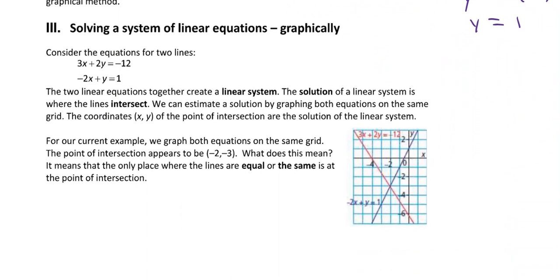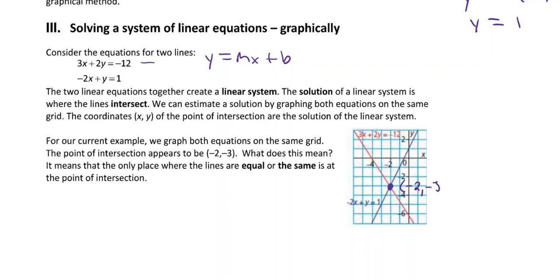Now consider the equations for these two lines. Typically we rearrange them into y = mx + b form to see the slope and y-intercept. Here the two lines are already graphed. The solution is where they intersect, which is at the point (-2, -3) — when x is -2, y is -3, and that's true for both lines.